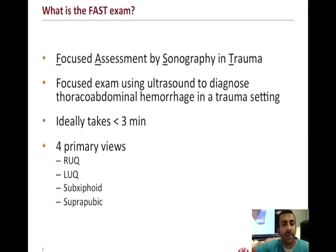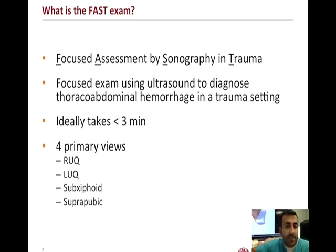The FAST exam is a focused exam designed to evaluate for thoracoabdominal hemorrhage in a trauma setting. However, the post-surgical setting can be similar when looking for rapid free fluid loss or hemorrhage in the thoracoabdominal area. Ideally, the FAST exam should be performed in under three minutes. It involves four primary views and four acoustic windows: the right upper quadrant, the left upper quadrant, the sub-xiphoid, and the suprapubic abdominal views.